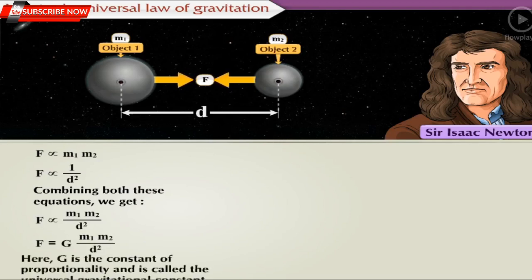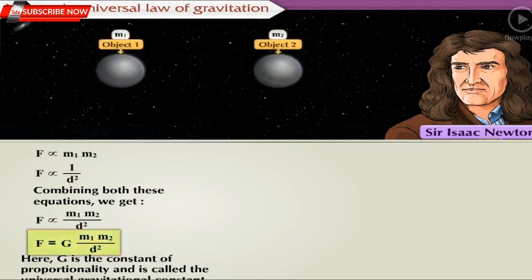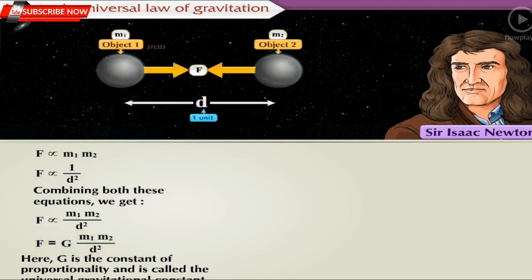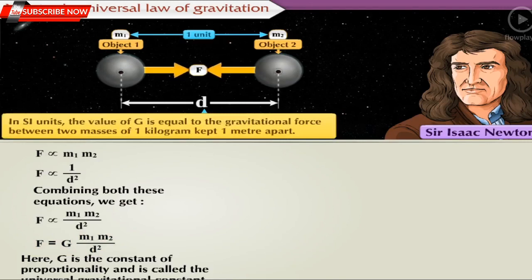Here, G is the constant of proportionality and is called the Universal Gravitational Constant. From this equation, it can be seen that the value of G is the gravitational force acting between two unit masses kept at a unit distance away from each other. Thus, in SI units, the value of G is equal to the gravitational force between two masses of 1 kilogram kept one meter apart.